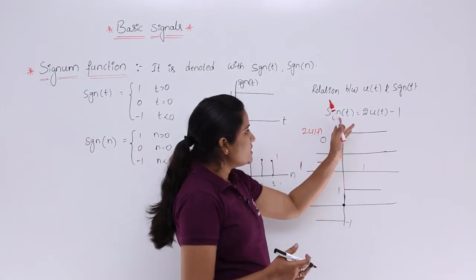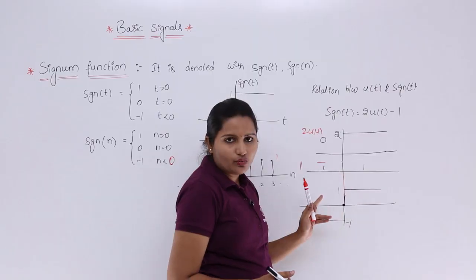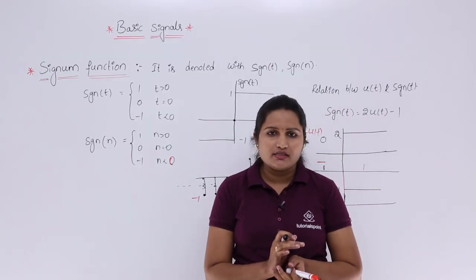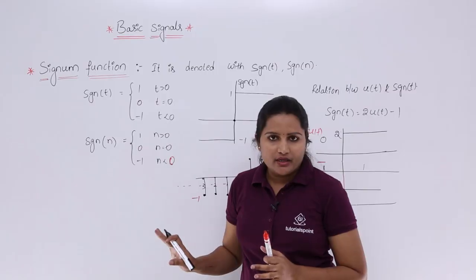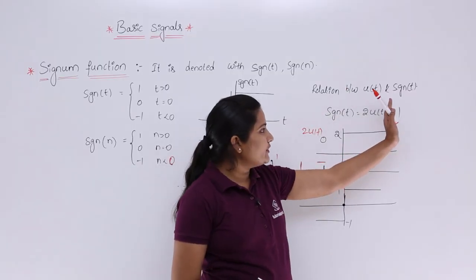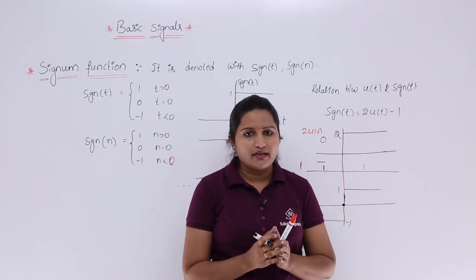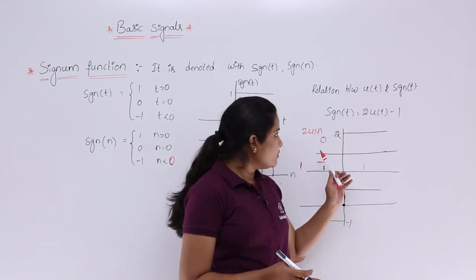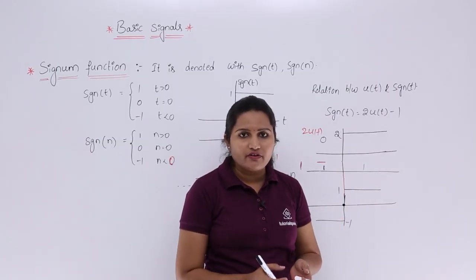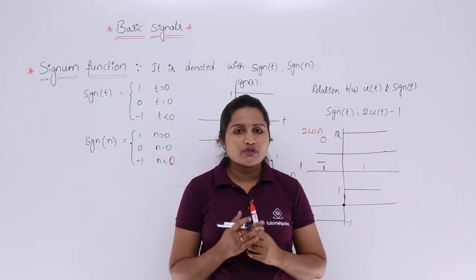The result is equivalent to the signum function: when t equal to 0 the average voltage is 0, from t greater than 0 you get 1, and for t less than 0 you get minus 1. The definitions in both continuous and discrete domains are very important, and the relation sgn(t) = 2u(t) - 1 is especially important — this relation has been directly asked in GATE and similar technical exams for one mark.